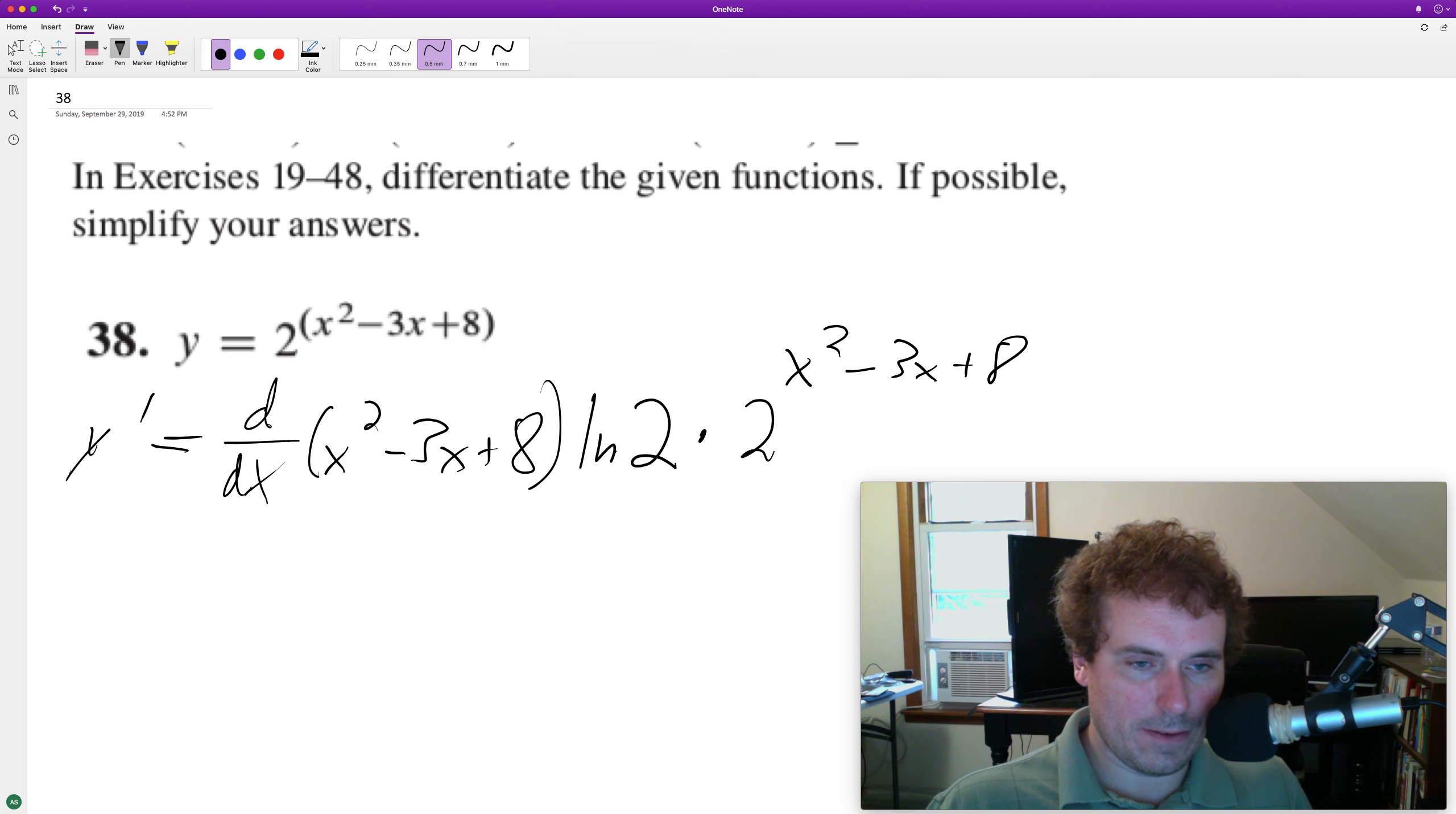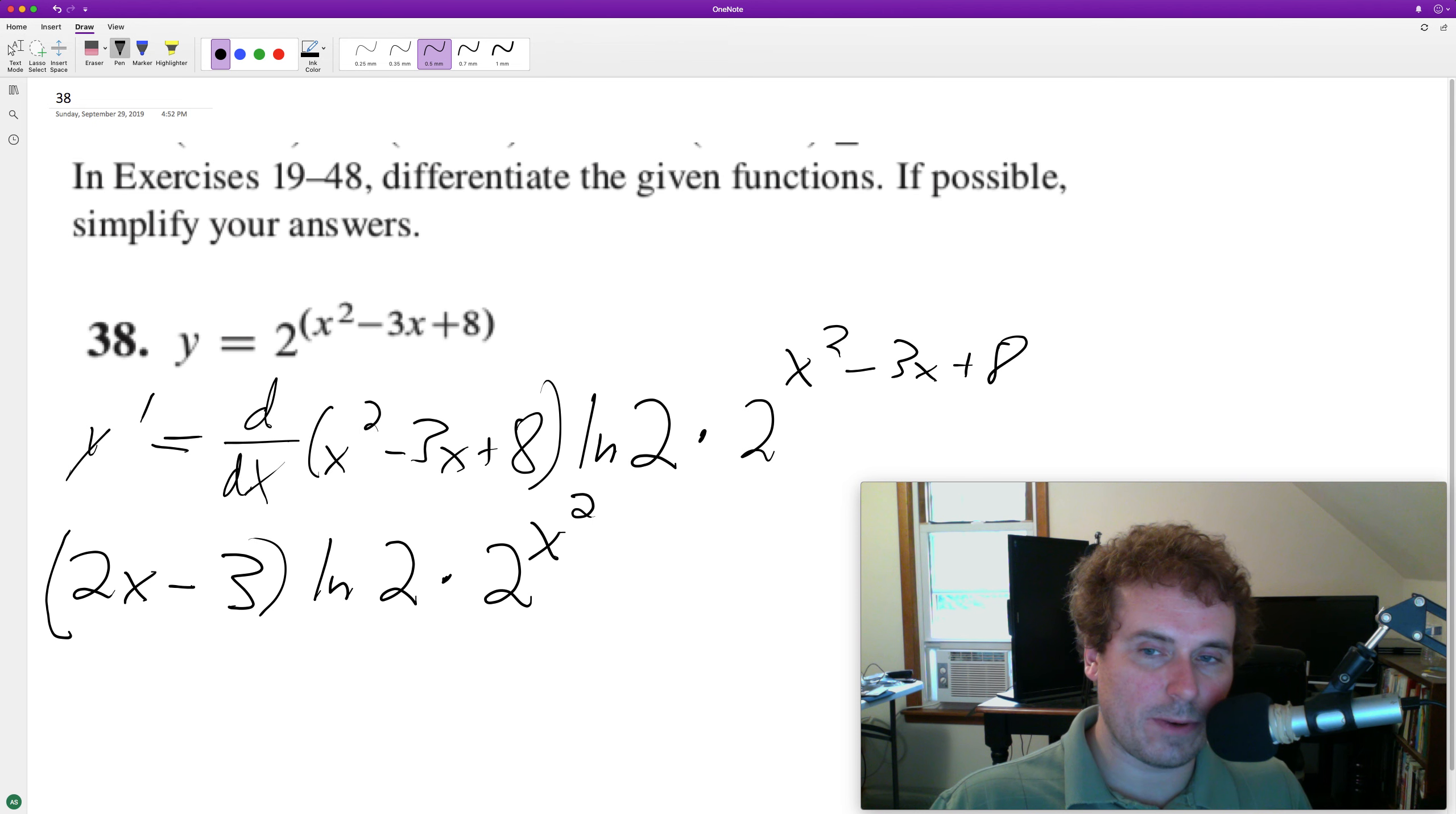So the derivative of all this is 2x minus 3, and then we have times the natural log of 2, all times 2 which is raised to the x squared minus 3x plus 8. And that's it.